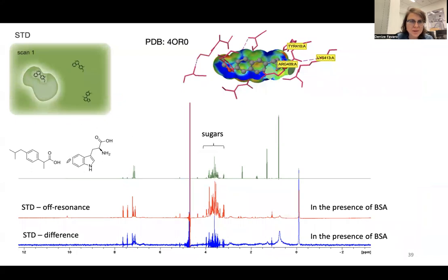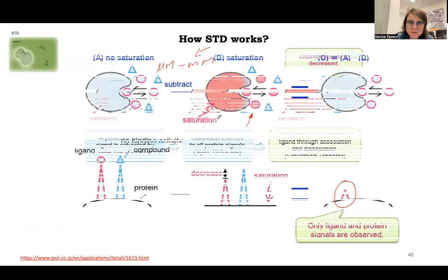This is an example where I have tryptophan and ibuprofen. It's not quite a good example because ibuprofen binds really high affinity to BSA. But I still can see, for example, on the difference, I can see all the peaks from the tryptophan that binds in the micromolar to millimolar range. And also you see all these out of phase peaks here from the sugars that don't bind the protein. These sugars come from the pills. The ibuprofen was actually extracted from ibuprofen pills.